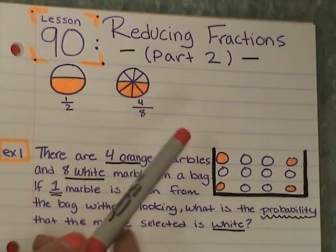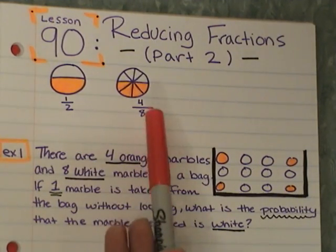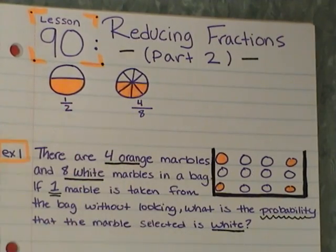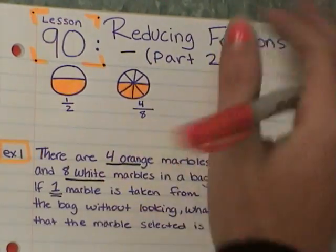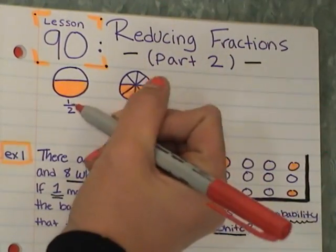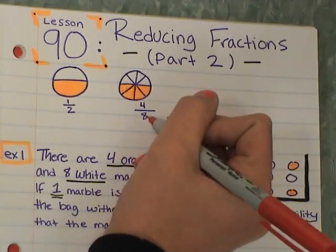Looking at our two circles, the equivalent fractions pictured below name the same amount. We see that 4 eighths is the same as 1 half. So we can take 4 eighths and divide by 2. We're reducing our fraction of 4 eighths. Now this is in lowest terms, but we're going to want to reduce that 4 eighths to lowest terms.